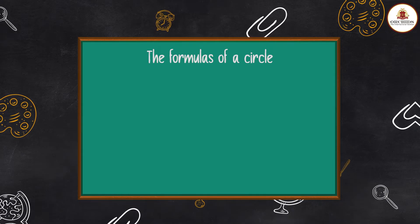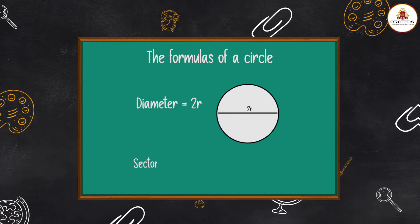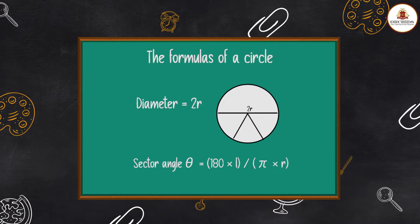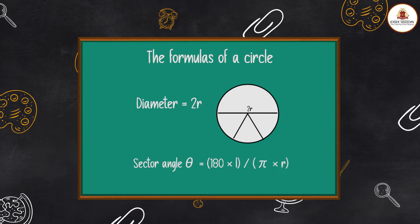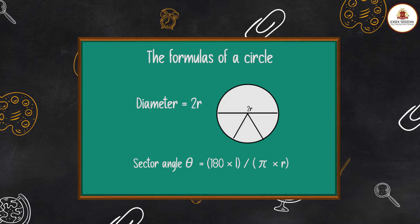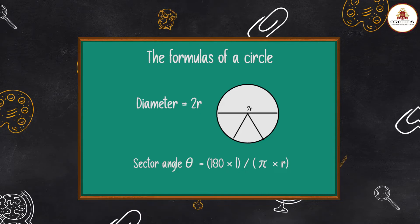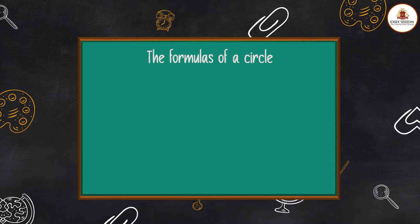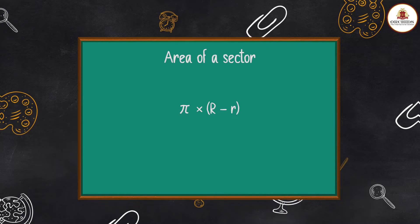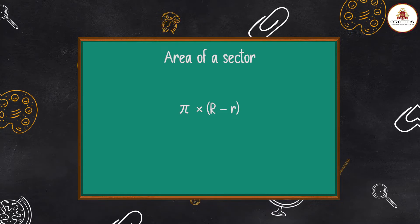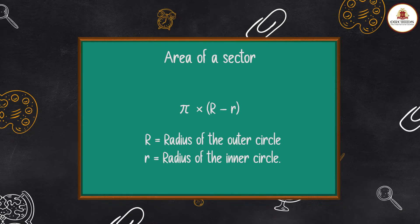The diameter of a circle is 2r. The sector angle of a circle is θ = (180 × l) ÷ (π × r). The area of a sector is π × (R² − r²), where capital R is the radius of the outer circle and small r is the radius of the inner circle.